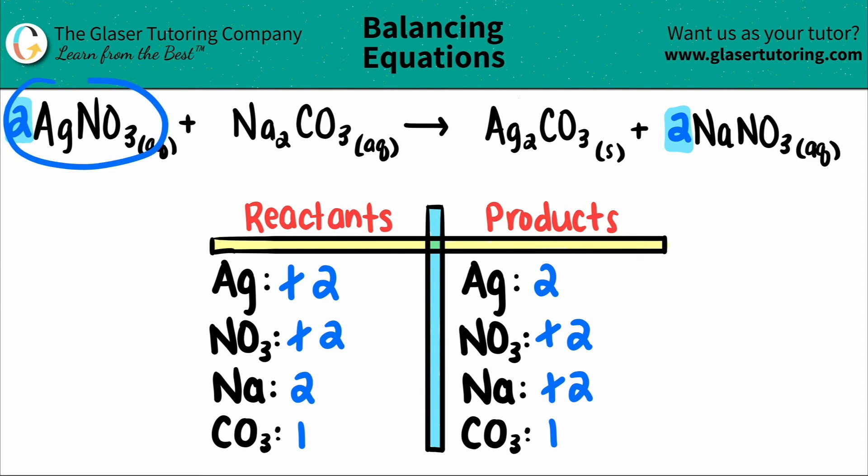The balanced equation would be two silver nitrates, AgNO3s, plus one sodium carbonate, Na2CO3, and that will produce one Ag2CO3 plus two NaNO3s.